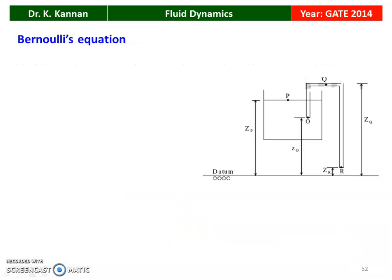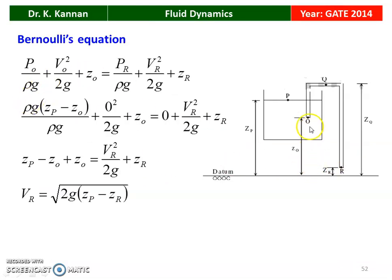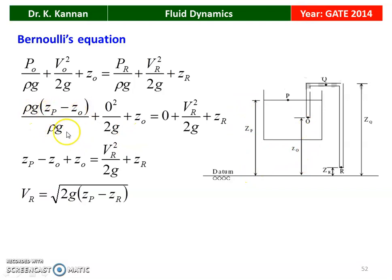The diagram is redrawn. We apply Bernoulli's equation between point O and point R — the inlet and outlet of the siphon: P_O/(ρg) + V_O²/(2g) + Z_O = P_R/(ρg) + V_R²/(2g) + Z_R. The pressure at point O equals ρg(ZP − ZO). So ρg(ZP − ZO) divided by ρg gives (ZP − ZO). The velocity at point O equals zero. So 0 + Z_O equals the outlet pressure, which is atmospheric (zero), plus V_R²/(2g) + Z_R.